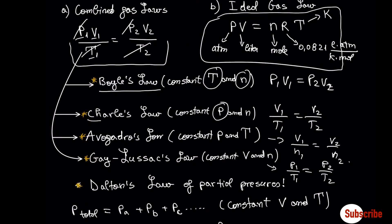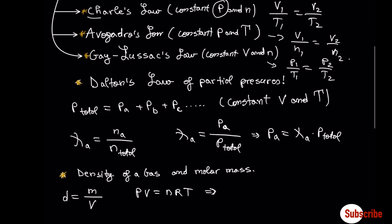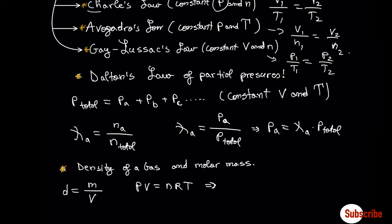Another law for ideal gases is Dalton's law for partial pressures. Dalton's law says that the total pressure in a system containing a mixture of gases is equal to the sum of the partial pressures of each constituent gas at constant volume and temperature. The total pressure equals the sum of each individual gas pressure, provided there is no chemical interaction — the gases should be inert to each other.